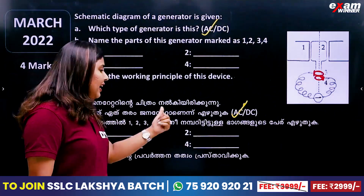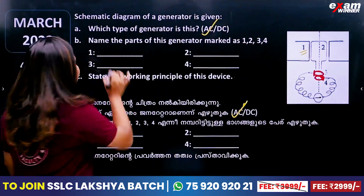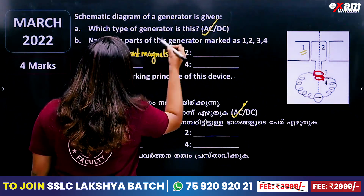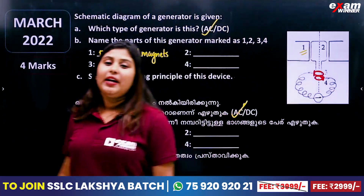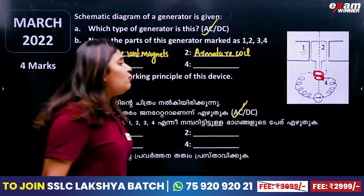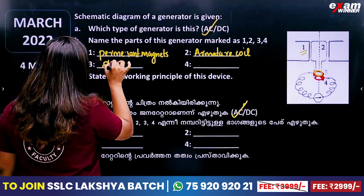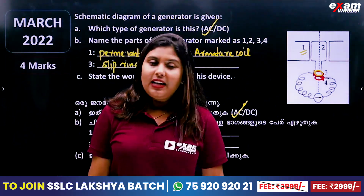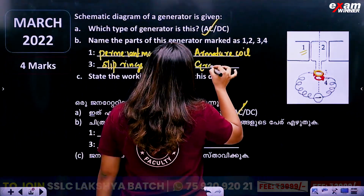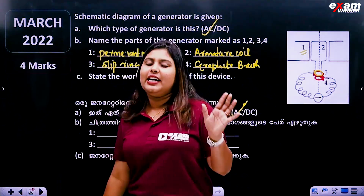Parts 1, 2, 3, 4 are to be named. There are slip rings — every slip ring. If you need to connect to the external circuit, you use them. That is the graphite brush. If you need to use a graphite brush, you can use it. You can ask questions about this.